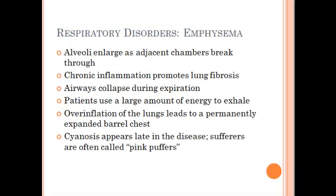In emphysema, the alveoli start to get bigger. Instead of looking like a cluster of grapes, the walls between alveoli break down, leaving larger chambers, which inhibits gas exchange. There's also inflammation, lung fibrosis, and eventually the airways can collapse. As you breathe out, the enlarged alveoli aren't able to stay open and suddenly collapse during expiration. It takes a lot of work to breathe out, the lungs can become overinflated, and you end up with cyanosis — patients are called pink puffers.